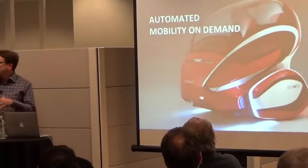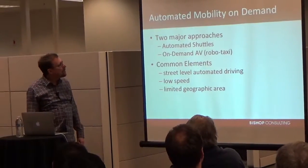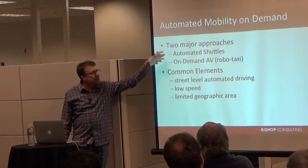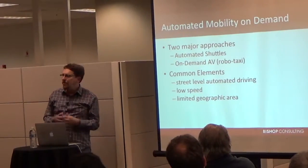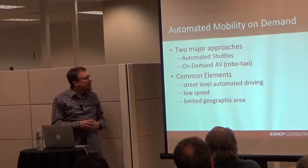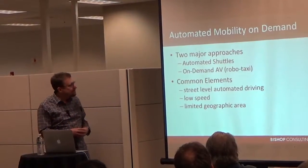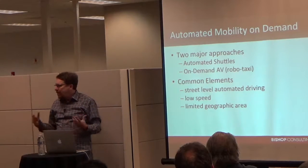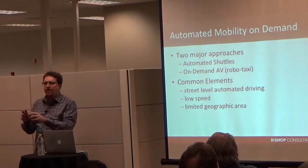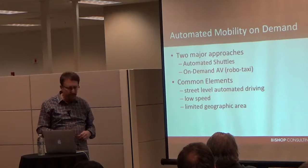So given that structure, the bottom line is: automated mobility on demand minimizes non-productive time and minimizes cost - or maximizes productive time and value. It's the one combination that does both. Now I want to tell you what's going on out there. There are two major worlds: automated shuttles - multi-person vehicles, eight or ten passengers - and on-demand automated vehicles, the robo-taxi. They share common elements: street level, low speed, generally in a very limited geographic area.